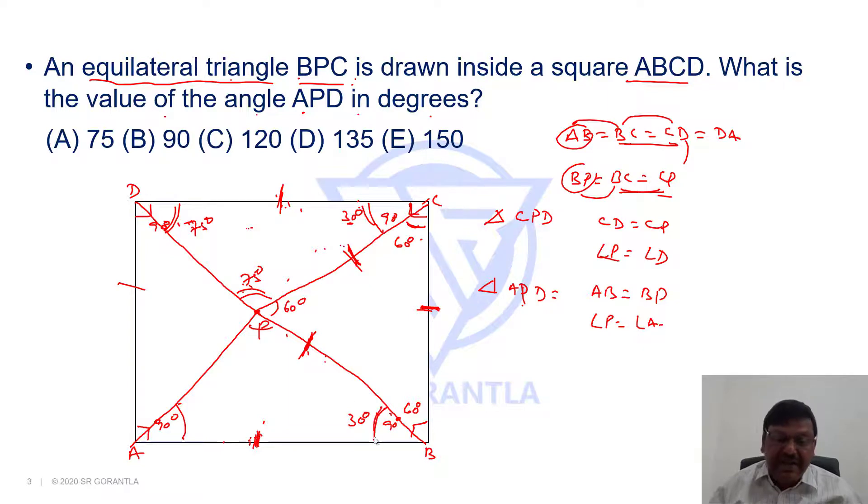Again, since this is 30, the sum of these two should be 150, but they are equal angles. So each one will be 75. If you look at this point P, at any point, the total angle should be 360. This is 75, 75, 150. If it is 150 and this is 60, 210, what should be this? This should be 360 minus 210. That is nothing but 150 degrees. So this angle is 150.